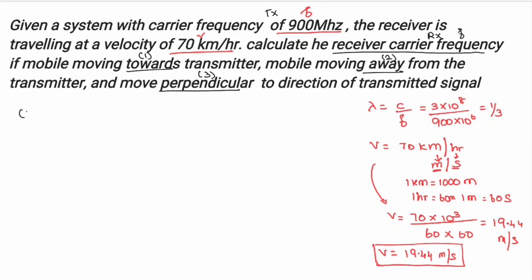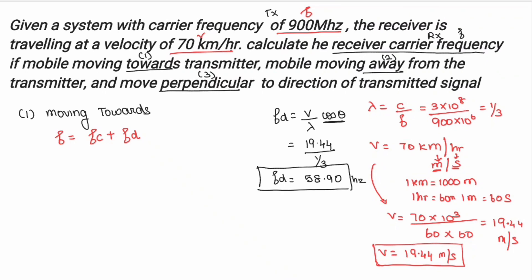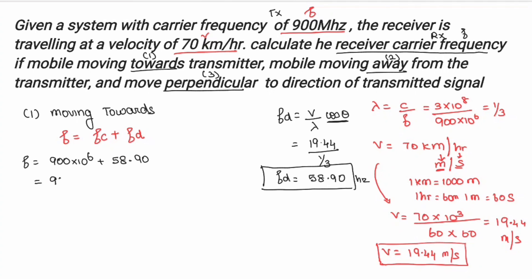Case 1: The mobile is moving towards the transmitter. When moving towards, the new carrier frequency = Fc + Fd. Fd = V · cos(theta) / lambda. Since moving directly towards, theta = 0 and cos(theta) = 1. So Fd = 19.44 / (1/3) = 58.90 Hz. New frequency = 900 MHz + 58.90 Hz = 900,000,058.90 Hz.